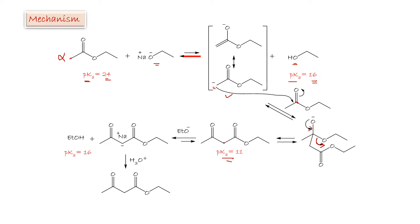Remember that this reaction is at equilibrium. The pKa of the beta-keto ester product is 11, and the pKa of ethanol is 16, so the equilibrium will shift forward to the product. This step is essential to drive the reaction forward, forming the beta-keto ester salt. Then we acidify with dilute acid to give the final ester. This acidification step is the driving force.